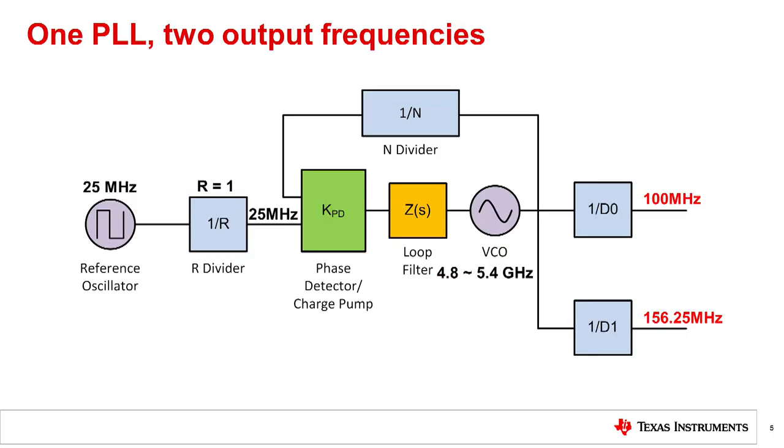Now that we know how to generate a single output frequency, let's look at generating two output frequencies from one PLL at the same time. In this case, the input is still 25 MHz, and the VCO range is, as before, 4.8 to 5.4 GHz. How would we configure the dividers D0 and D1 to generate both 100 MHz and 156.25 MHz from a common VCO frequency? Pause the video if you want a second to think about this question.